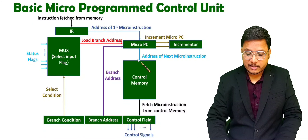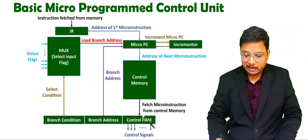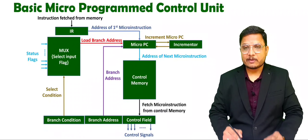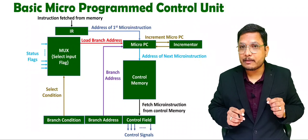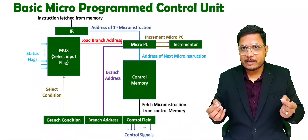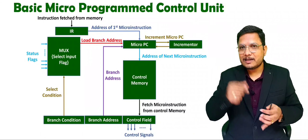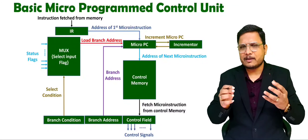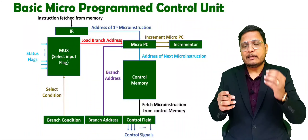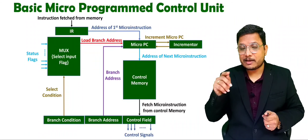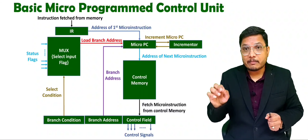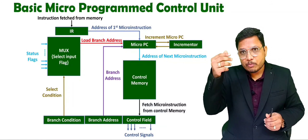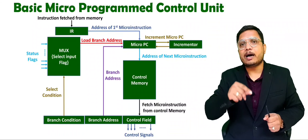The address of the next micro-instruction is given and gets fetched. Once you fetch one micro-instruction, it will be generating control signals. But sometimes it may be the case where you don't need to move on to the next micro-instruction — you may need to jump to another micro-instruction.